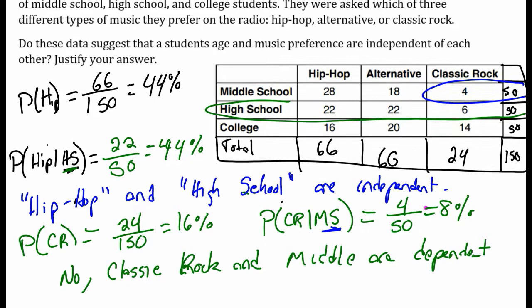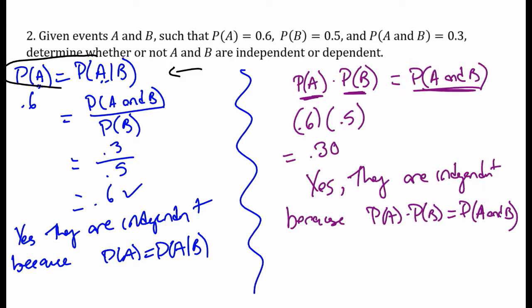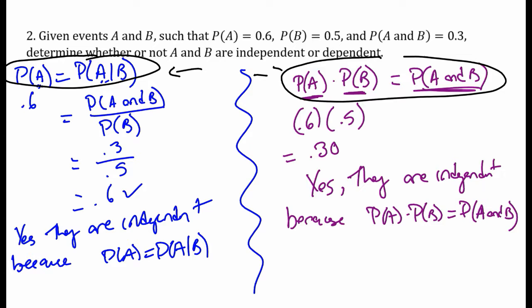For some music groups there is independence, but for others there is not. There is some kind of association between music preference and age — they're not all independent. High school and hip-hop are independent, but not all of the groups are. The big idea: here are two different ways to test for independence. The probability of A equals the probability of A given B, or multiply P(A) and P(B) and you should get P(A and B). Knowing that B happened doesn't change the probability of A. If it does change the probability, then they are dependent.